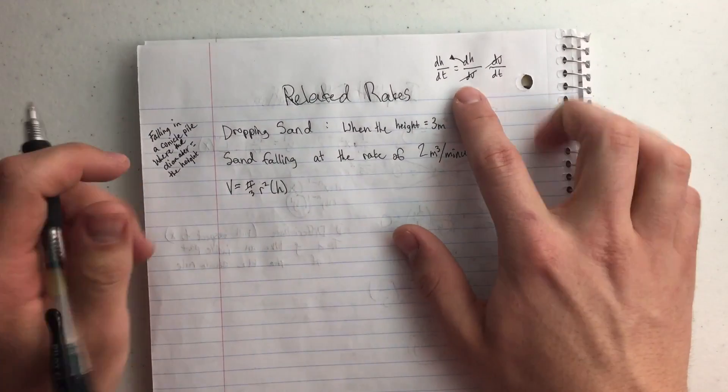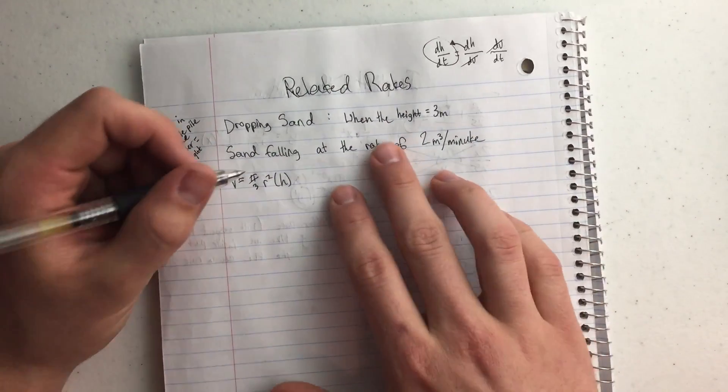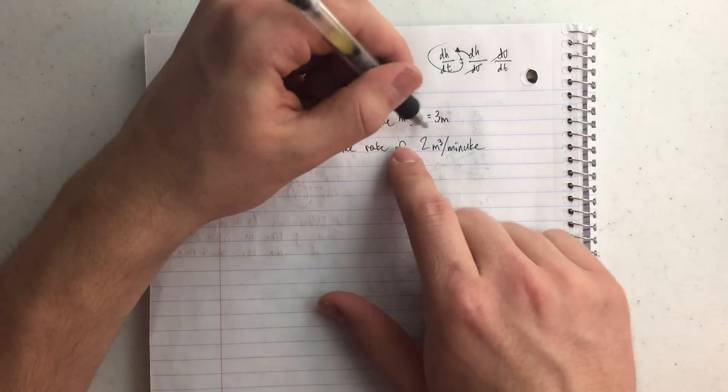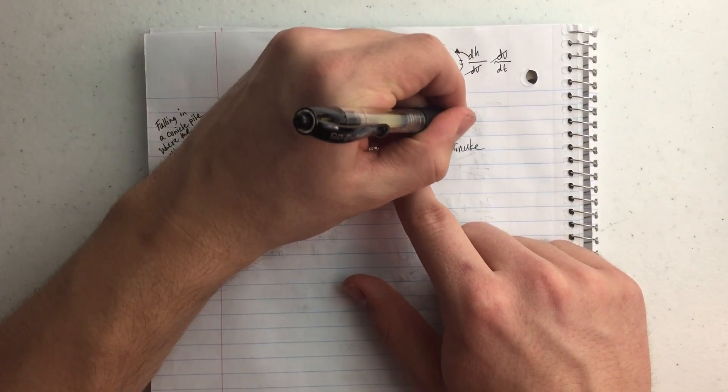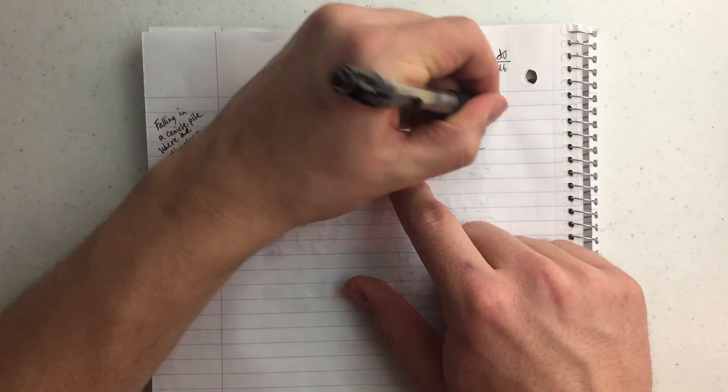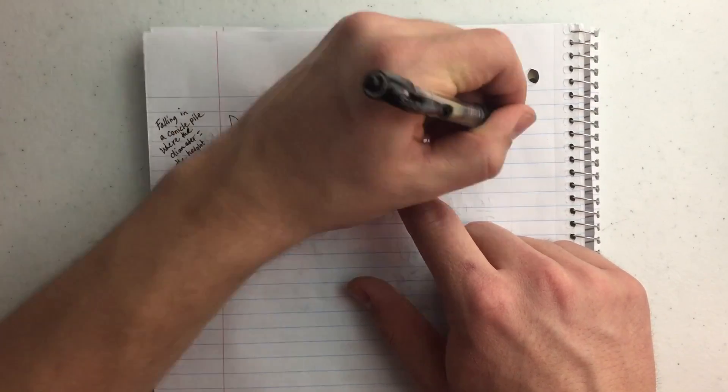So since we're going to be using this, how do I know what I want? So what I did when I was solving these problems is I would look for what do I want. When the height is at 3 meters, how fast is the height growing?